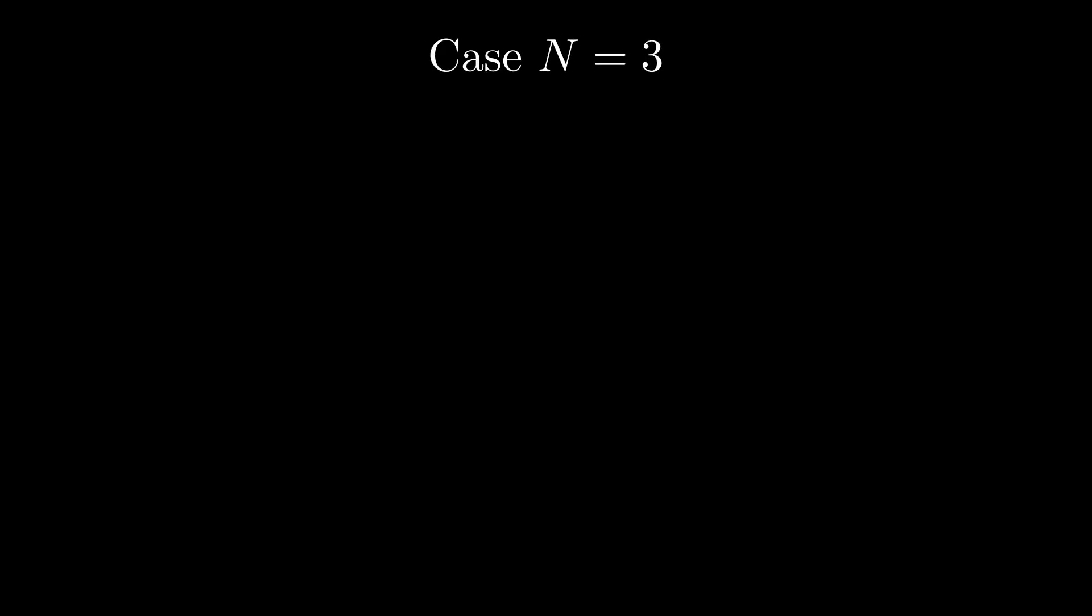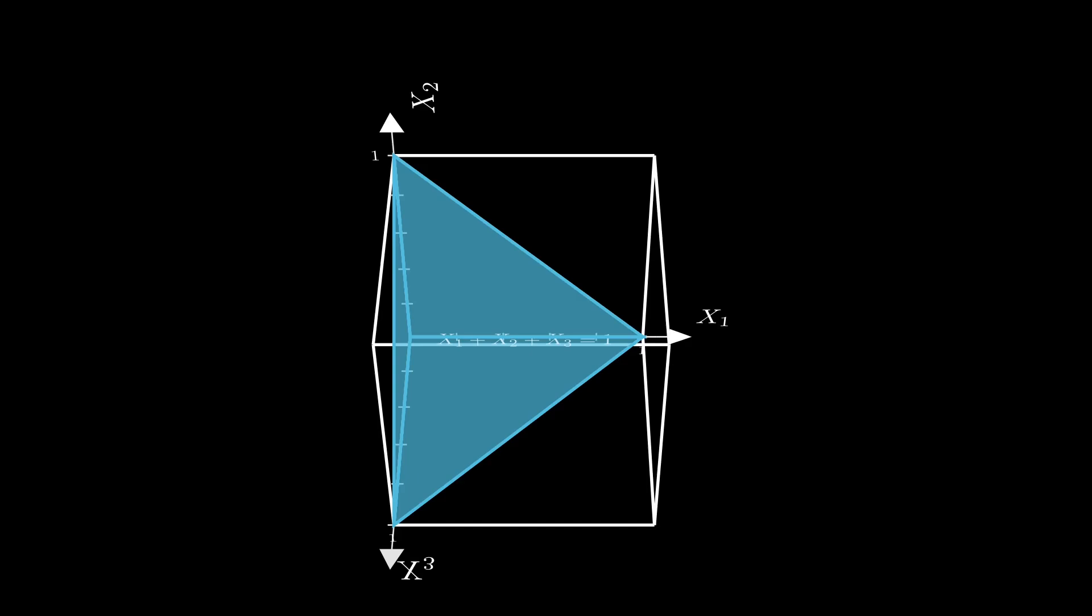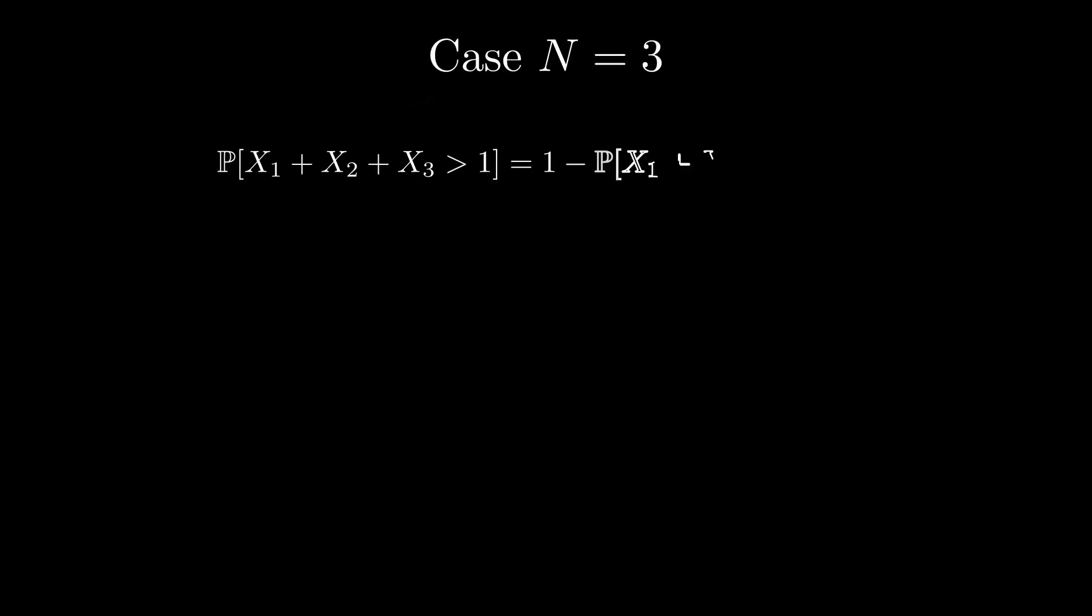For big N equals 3, we extend the previous argument to 3D space. The volume of the tetrahedron is 1 over 6. So we can compute the probability that the sum exceeds 1 by 1 minus the volume of the tetrahedron over the volume of the cube, which gives us 5 over 6.